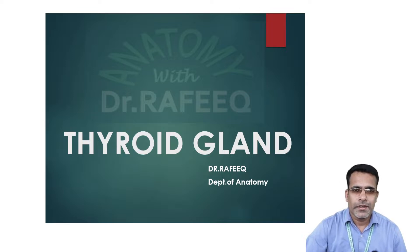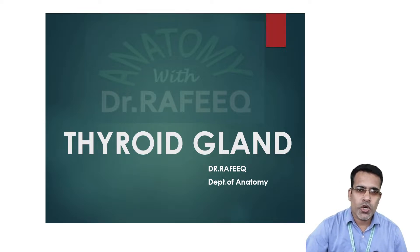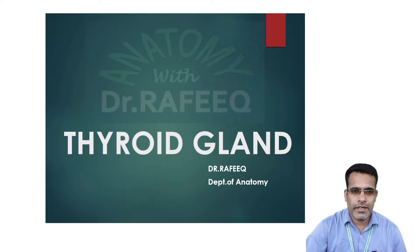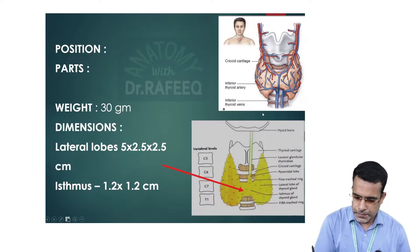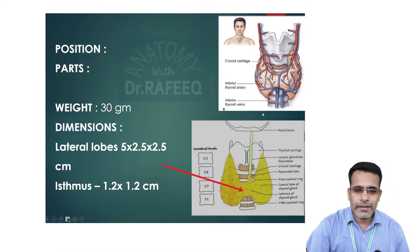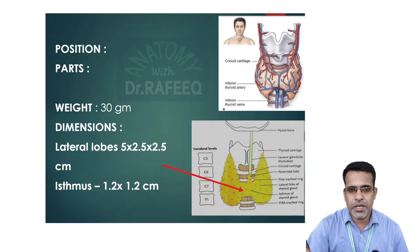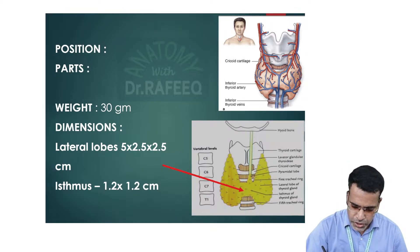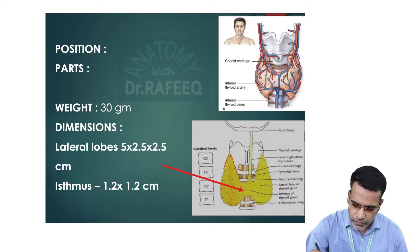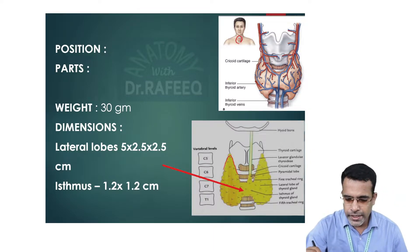Hello everyone, welcome to this short video explaining the basic anatomy of the thyroid gland and associated structures. The thyroid gland is a butterfly-shaped endocrine gland located in the anterior inferior aspect of our neck. This picture shows how it is placed in front of the neck in relation with the trachea, that is the windpipe.